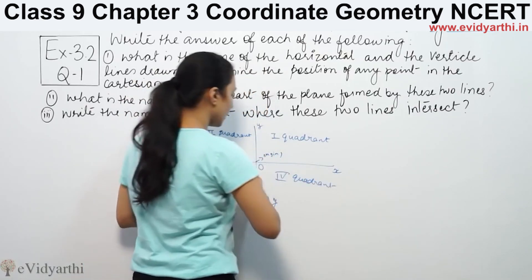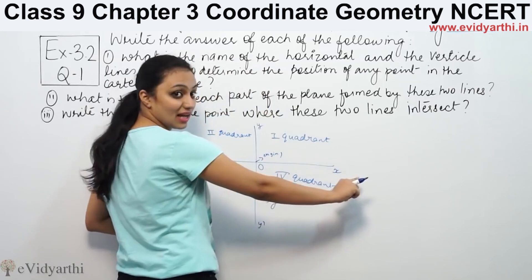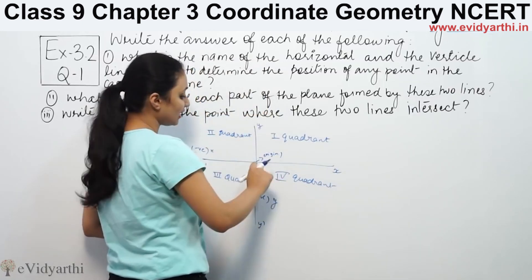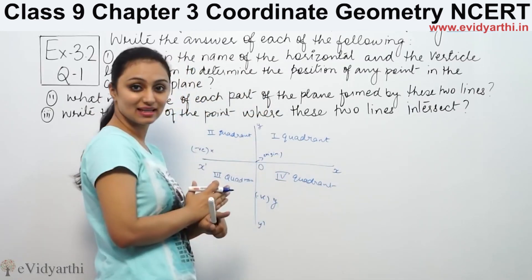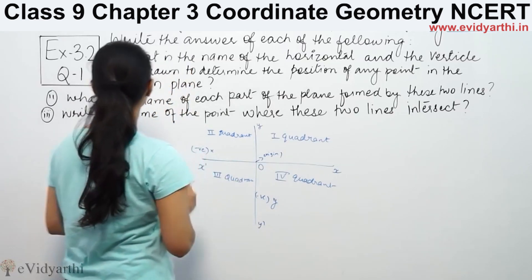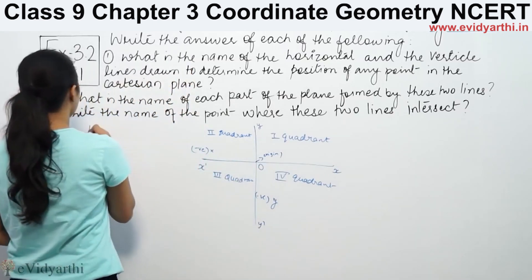This is our horizontal line and vertical line. These are the points that you can select on the lines. This is the origin. So, these are our three questions.